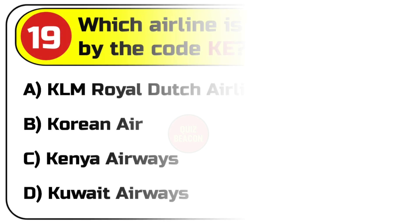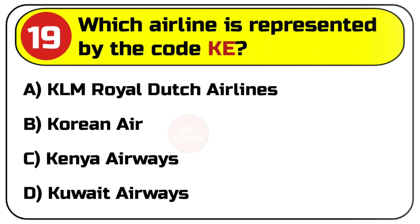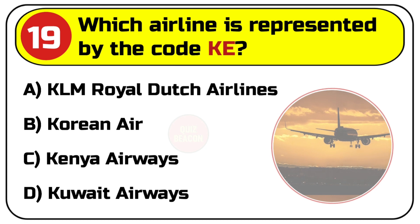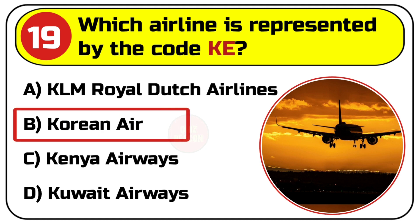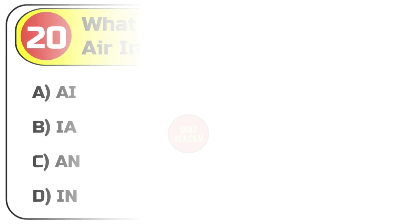Question number nineteen: which airline is represented by the code KE? Options are A. KLM Royal Dutch Airlines, B. Korean Air, C. Kenya Airways, D. Kuwait Airways. Correct answer is B. Korean Air.